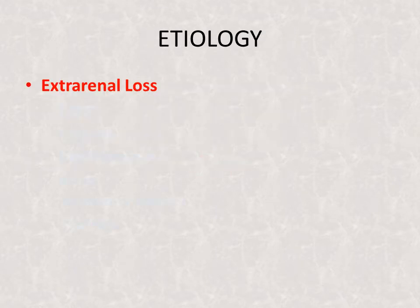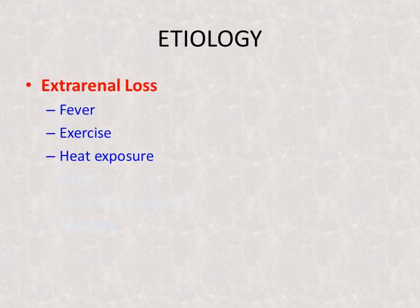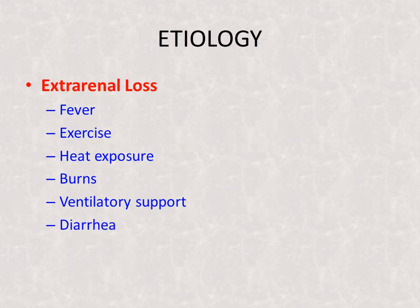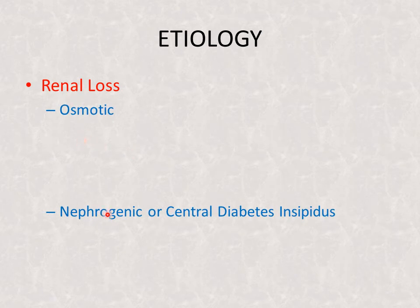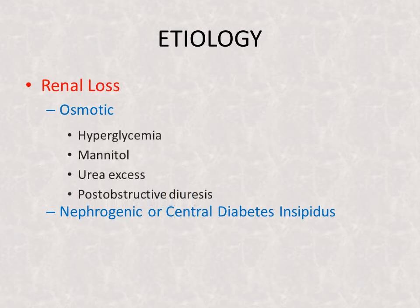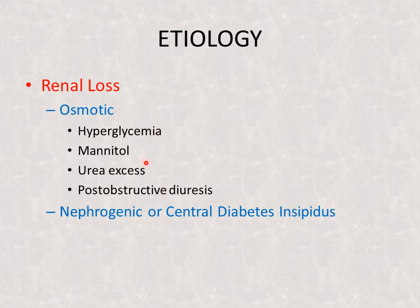There can be extra-renal losses due to various causes: fever and exercise, heat exposure, burns, ventilatory support, and diarrhea. Renal loss can be due to osmotic diuresis or nephrogenic/central diabetes insipidus. Osmotic causes include hyperglycemia, mannitol, urea excess, and post-obstructive diuresis.